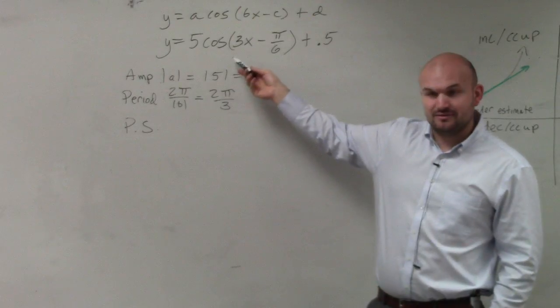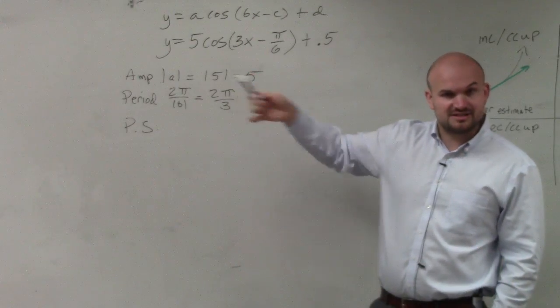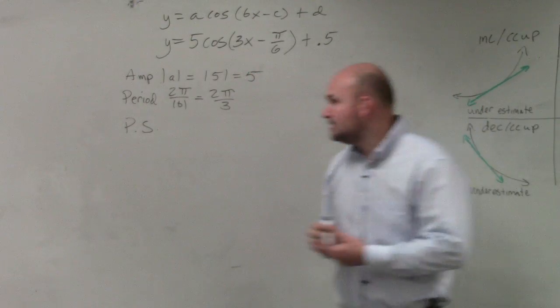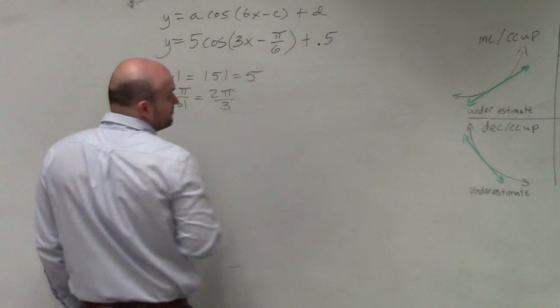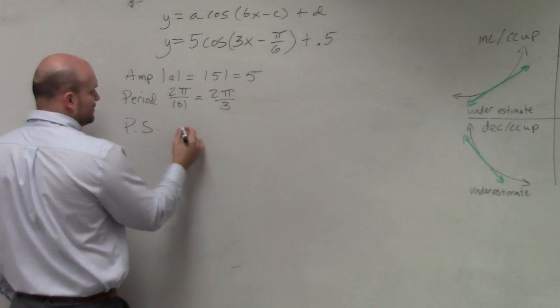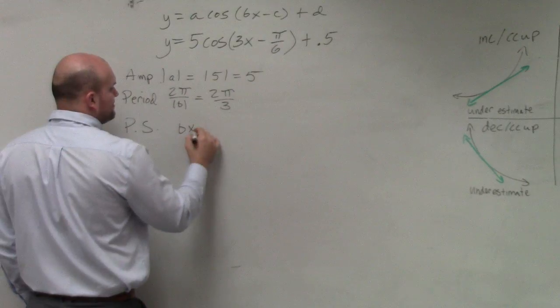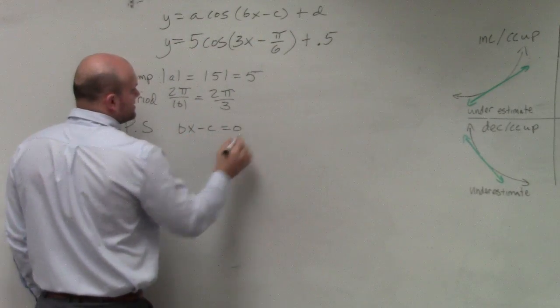this b, which is your change in period, affects your horizontal translation. So rather than just saying π over 6 to the right, because that's incorrect, what I've told you to do is take bx minus c and set it equal to 0.